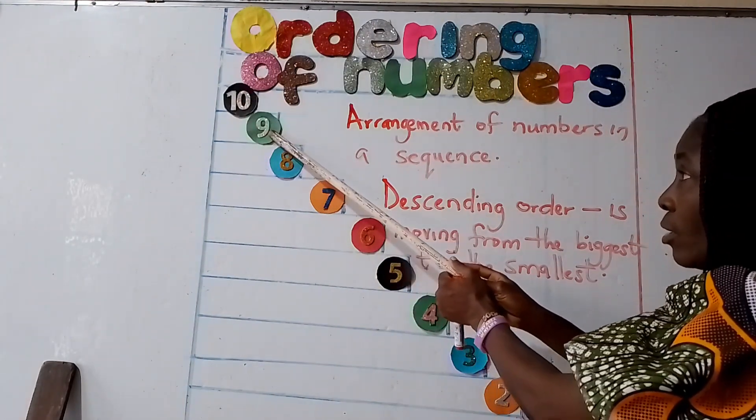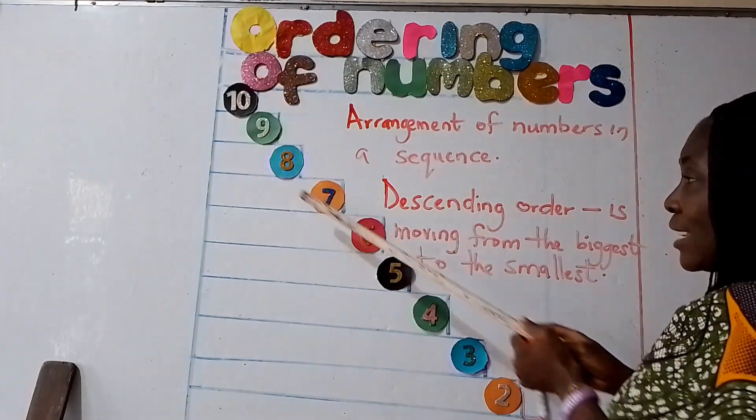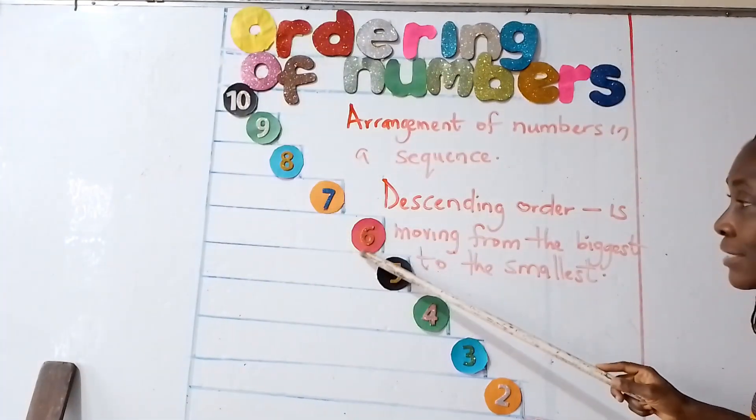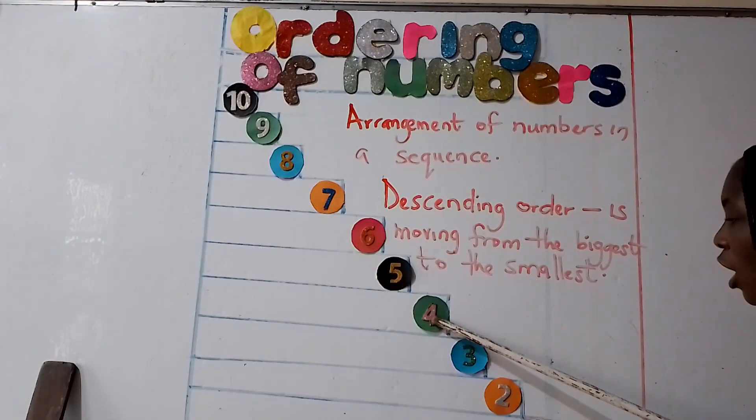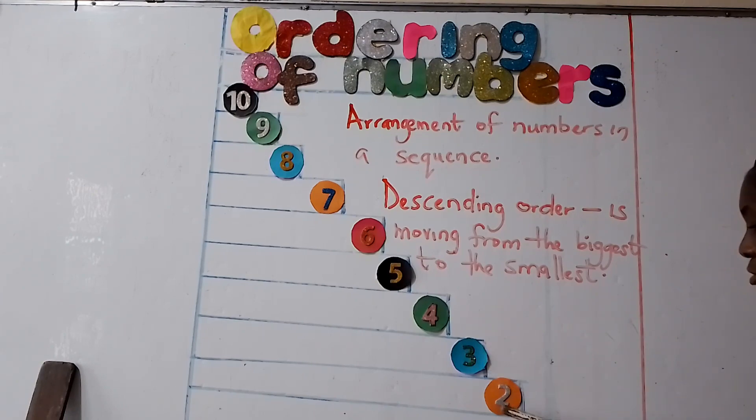10, 9, 8, 7, 6, 5, 4, 3, 2, 1. Can we do it again?